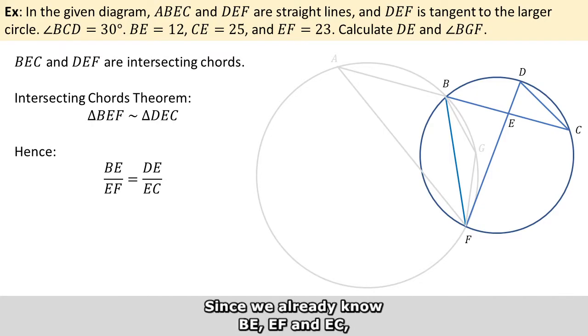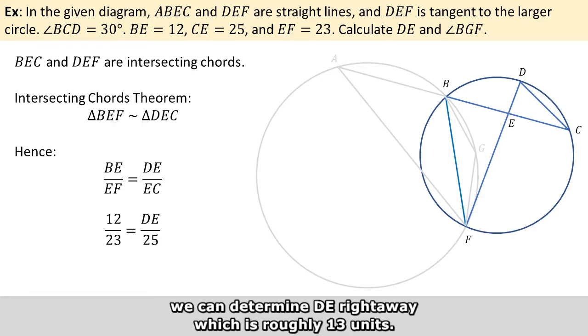Since we already know BE, EF, and EC, we can determine DE right away, which is roughly 13 units.